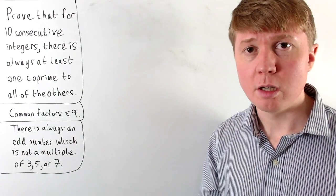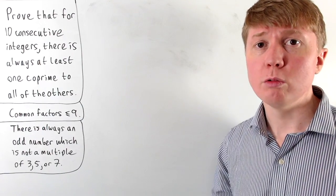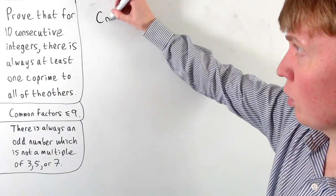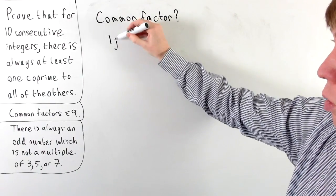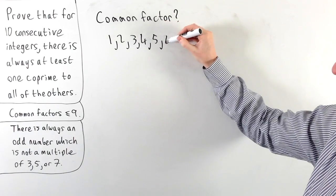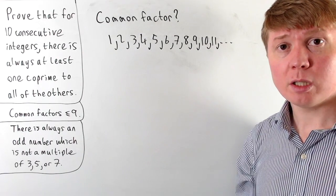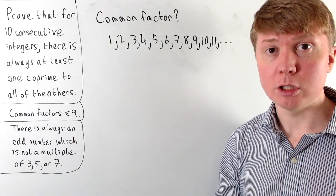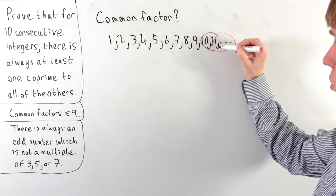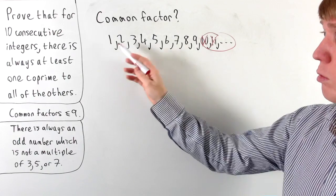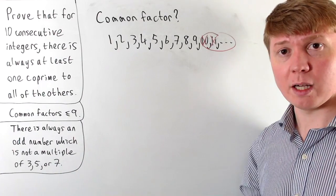We're now really restricted in terms of what the factors of this integer could actually be. Let's imagine this integer has a common factor with one of the other integers in our list. Our possible common factors could be 1, 2, 3, 4, 5, 6, 7, 8, 9 — and once we get to 10 and above, we've seen that because our integers are at most 9 apart, they can't have a common factor of 10 or higher. Focusing on this particular odd number which isn't a multiple of 3, 5, or 7 — since it's odd, it can't have 2, 4, 6, or 8 as factors.